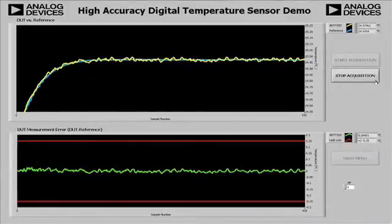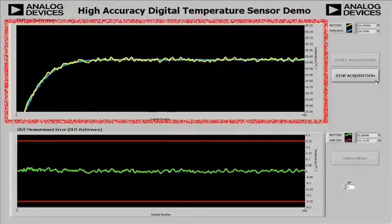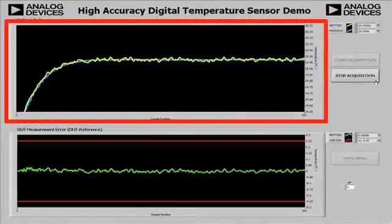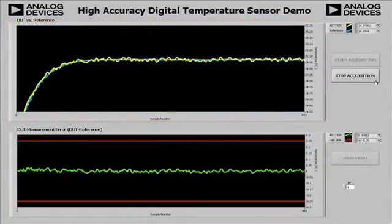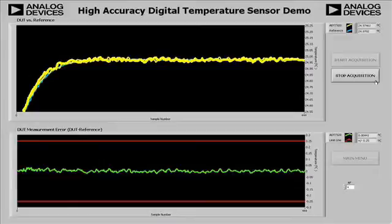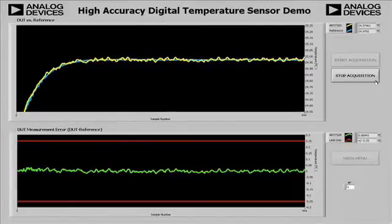The display consists of two charts. The top chart profiles the raw temperature data from the ADT-7320 and the reference thermometer. The ADT-7320 data is displayed in yellow and the reference thermometer data is displayed in blue.